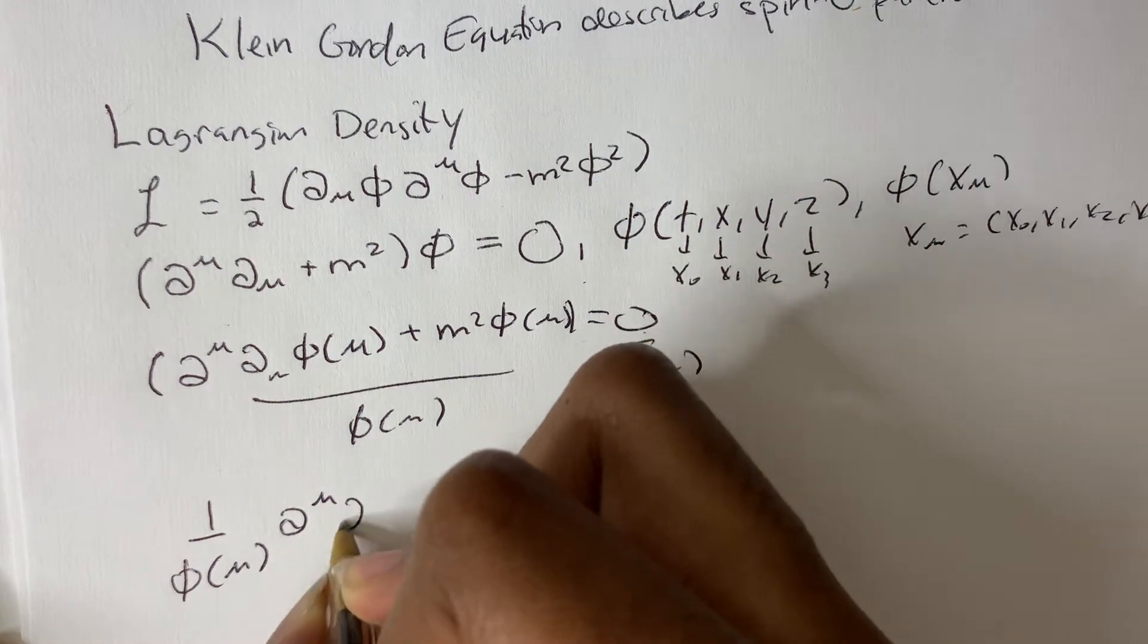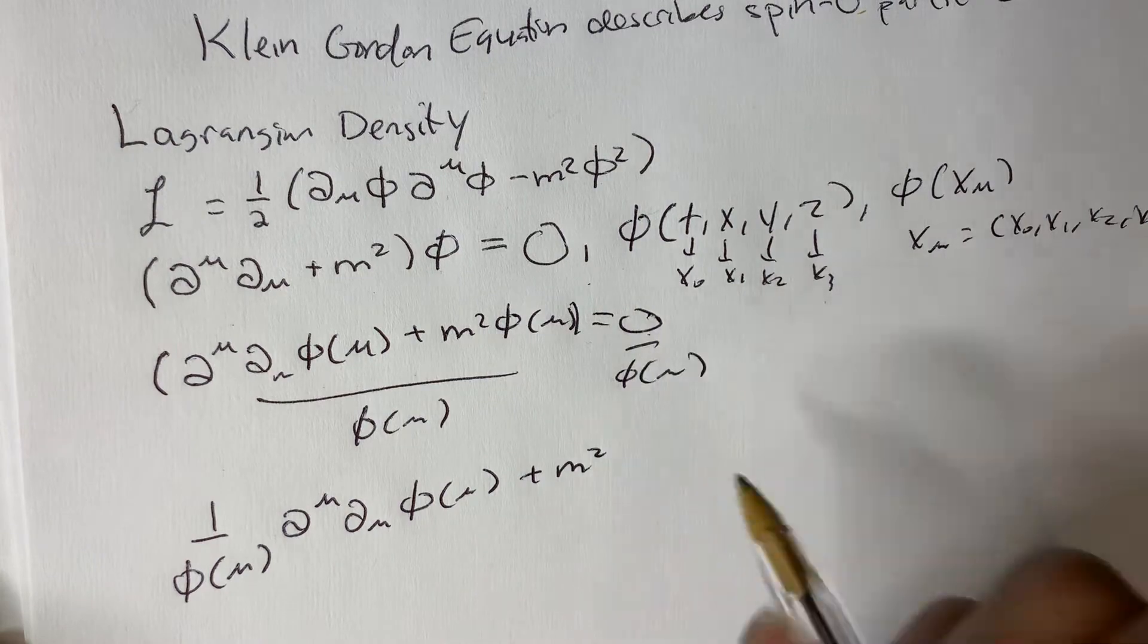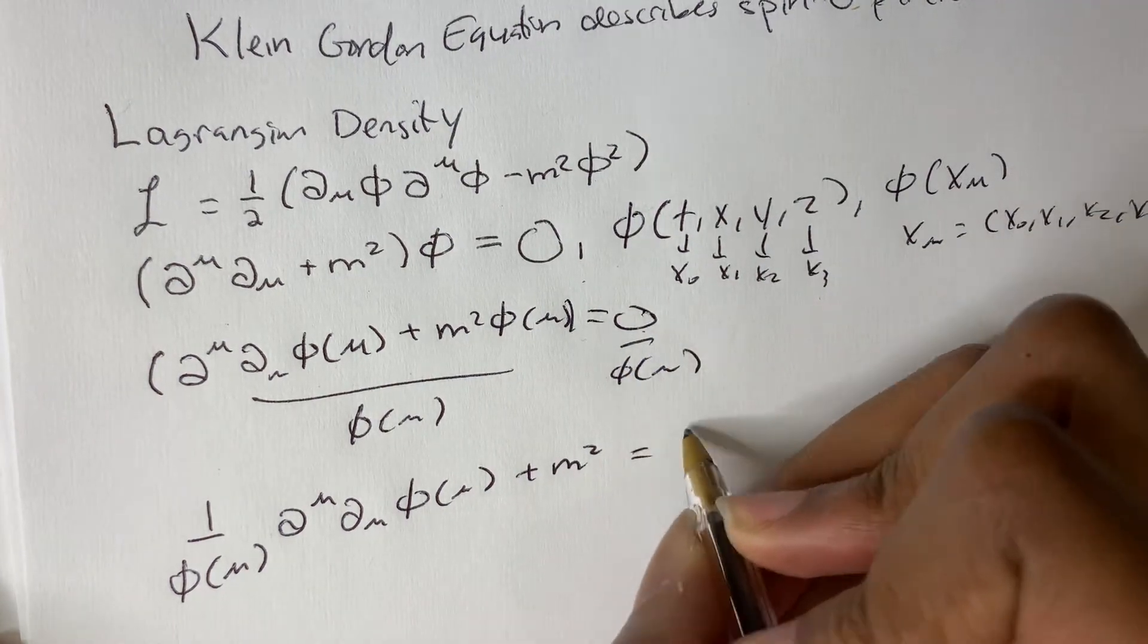So we divide both sides by phi of x mu, this stays 0, and we get 1 over phi of x mu, partial mu, partial mu, phi of x mu, plus m squared, these would cross-cancel, equals 0.